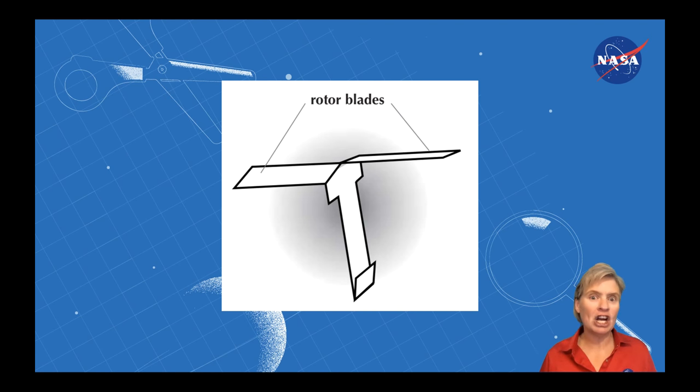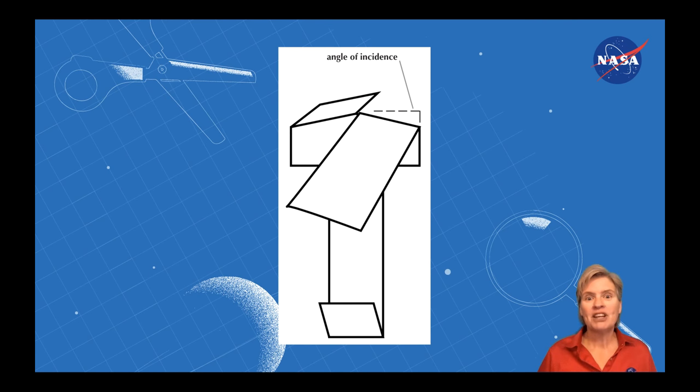The rotor blades are key to how your helicopter performs. So try making them smaller or building another helicopter and making them larger. Another thing that you can adjust is how they are folded. The angle of incidence that is formed between the rotor and the body can be changed and possibly impact the performance of your helicopter.